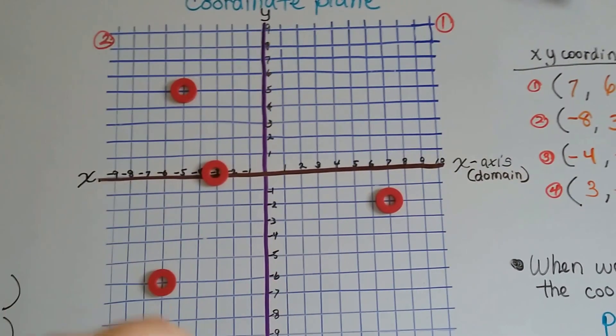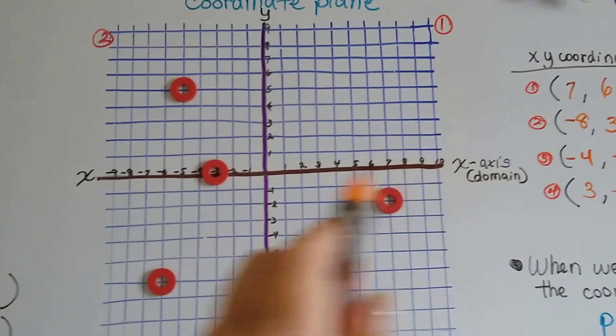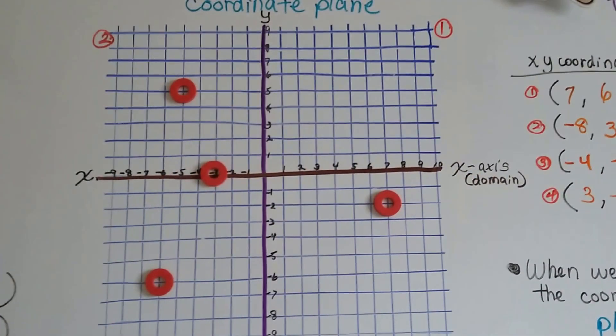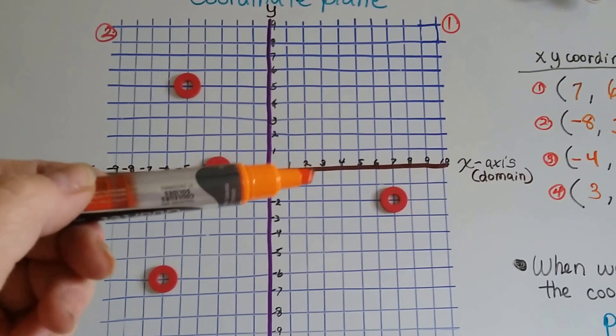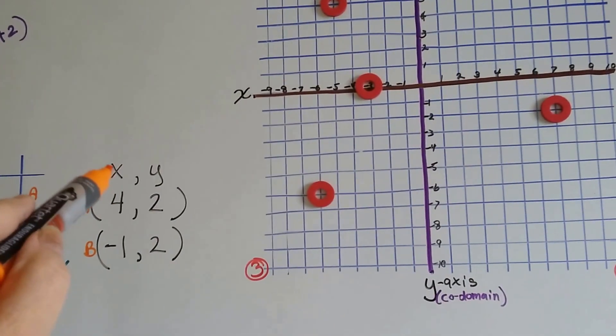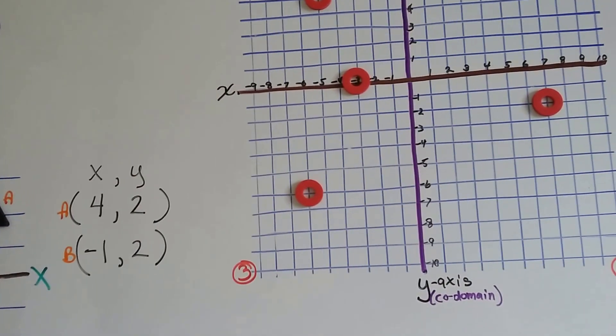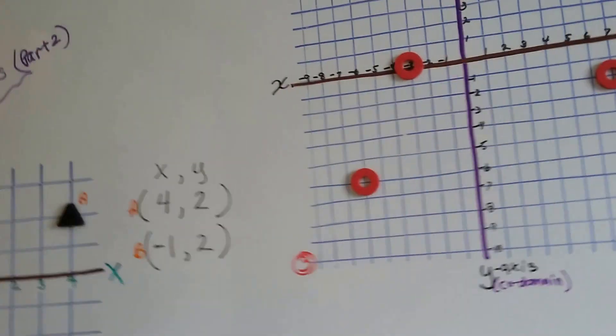So, this tells us how tall or deep we're going. And, this tells us how far left or right we're going. You always start with the x. Because, in the ordered pair, the x is here and the y is there. Always. So, that's how you plot points.